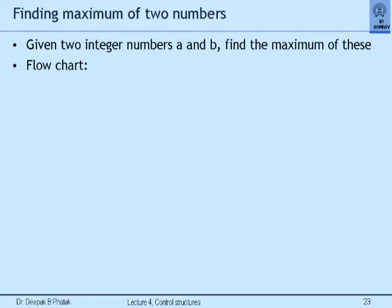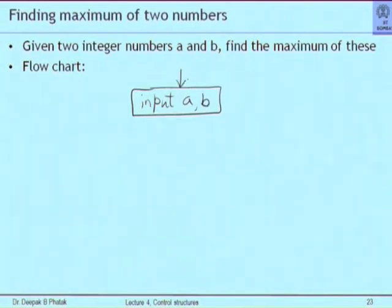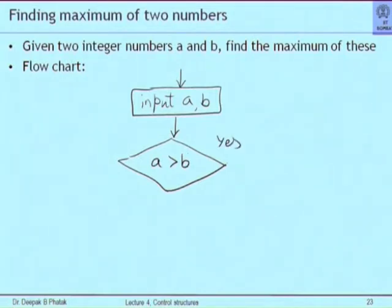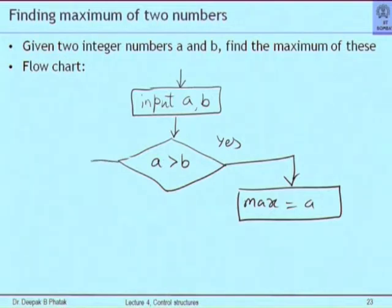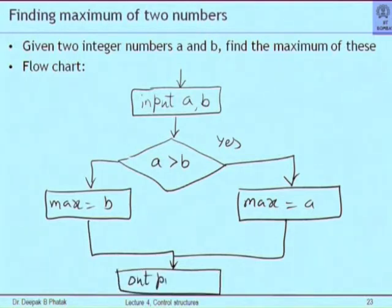Here is another question: given two numbers, let us find out the maximum of two numbers. Let us say A and B are two numbers. First I read them to find out the maximum. Now typically the maximum is found out by a comparison — is A greater than B? On the yes side, I will say max equal to A. If the answer is no, I will say max equal to B. And in either case, I will come out.